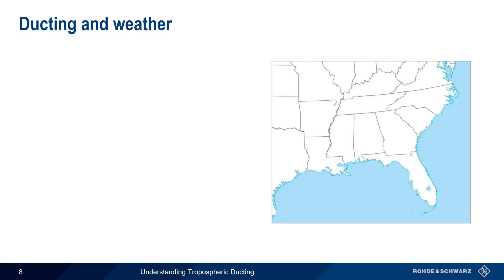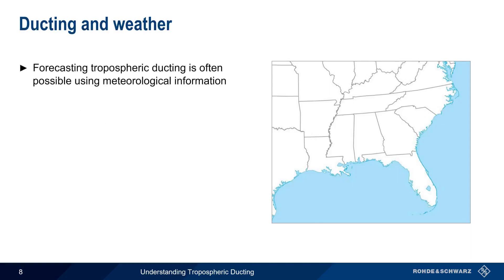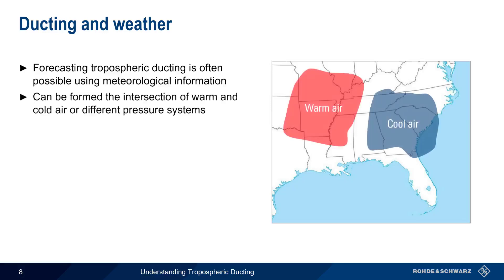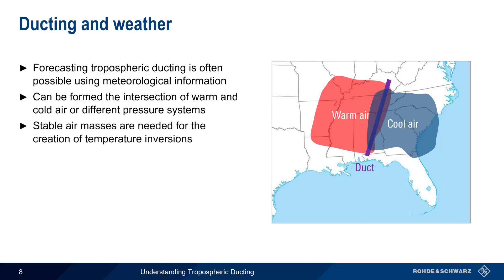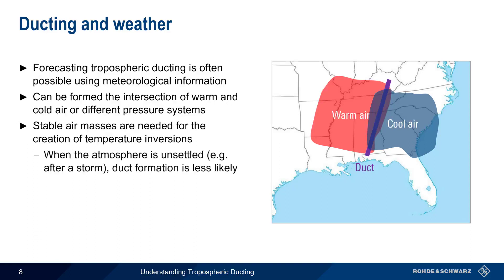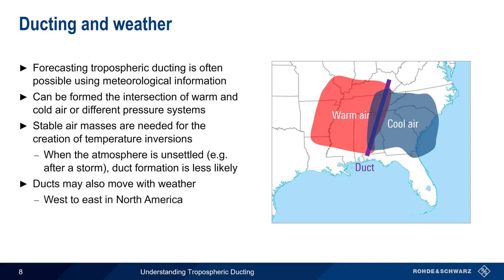In fact, tropospheric ducting can often be predicted or forecasted using standard meteorological or weather information. For example, if a region of warm air intersects a region of cooler air and slides above it, this can create a temperature inversion and ducting. Note, however, that a stable air mass is needed for creation of temperature inversions and ducts. If the atmosphere becomes unsettled or well-mixed, such as following a storm, then formation of ducts becomes much less likely. And finally, note that ducts will move with the weather — in North America, this movement is primarily west to east.